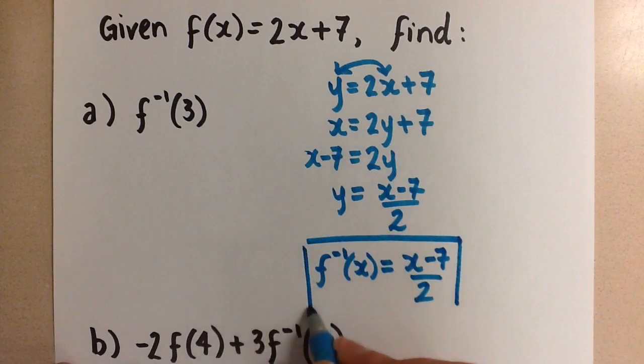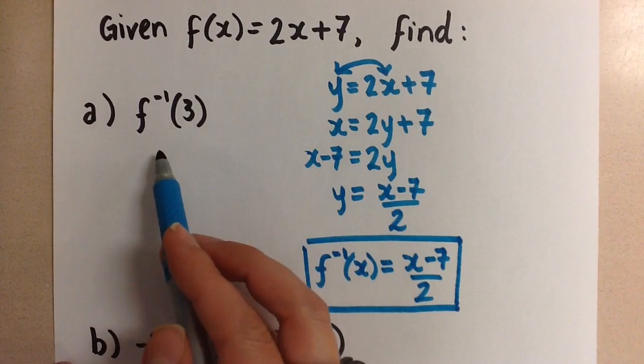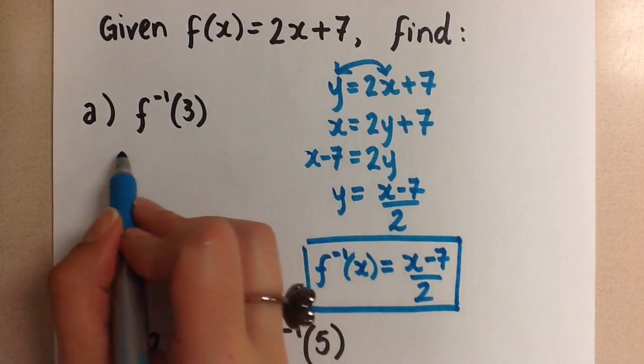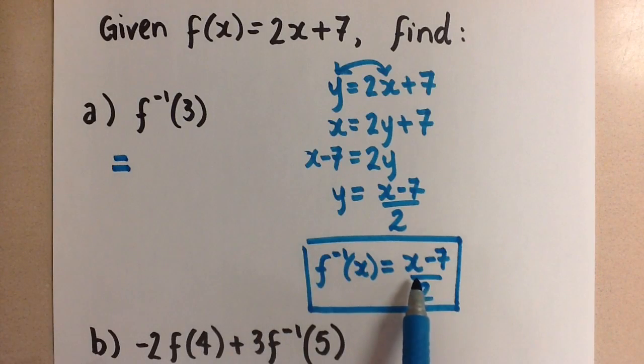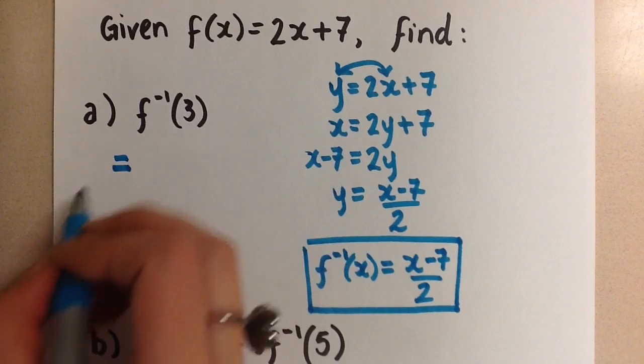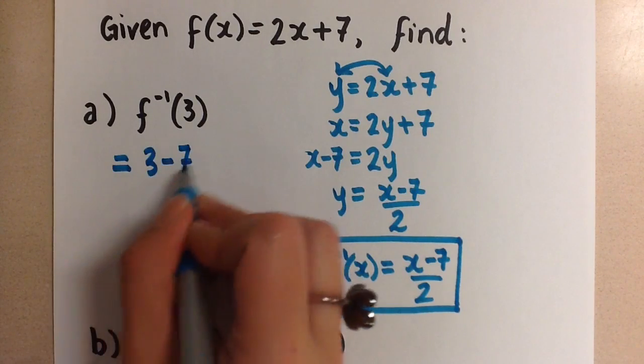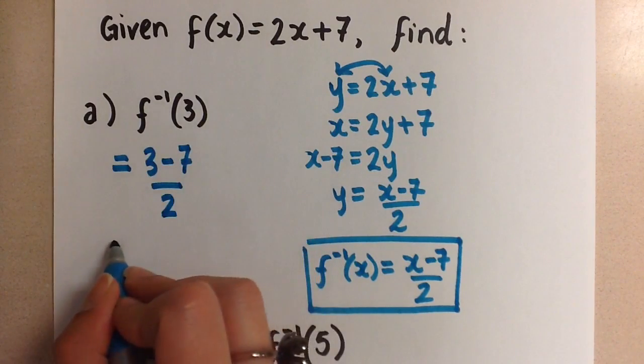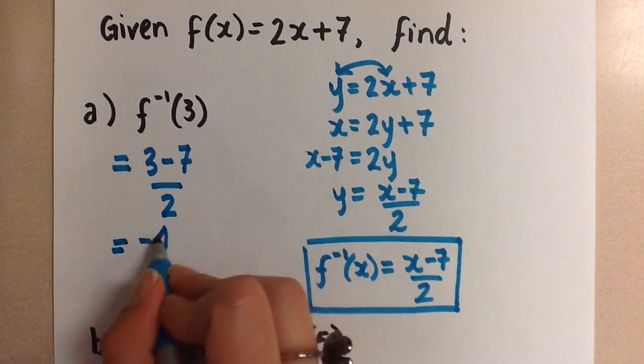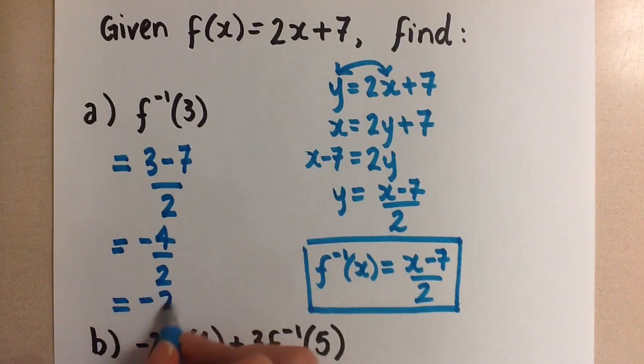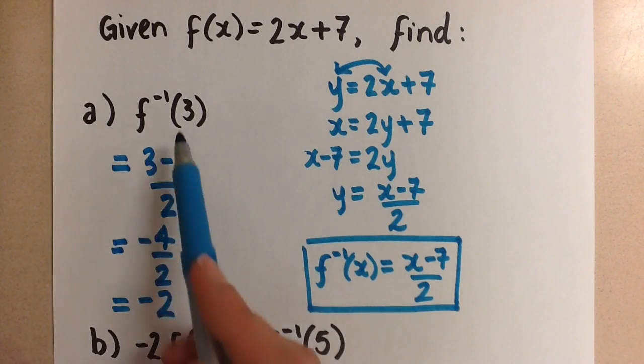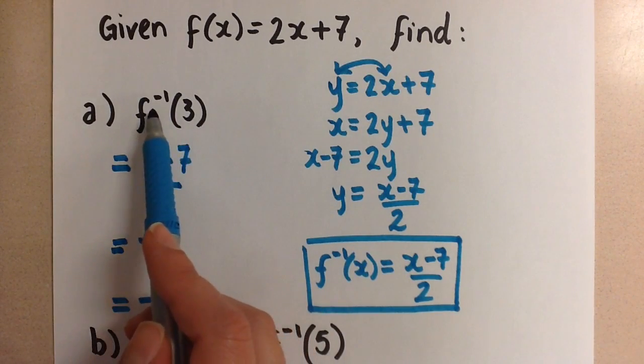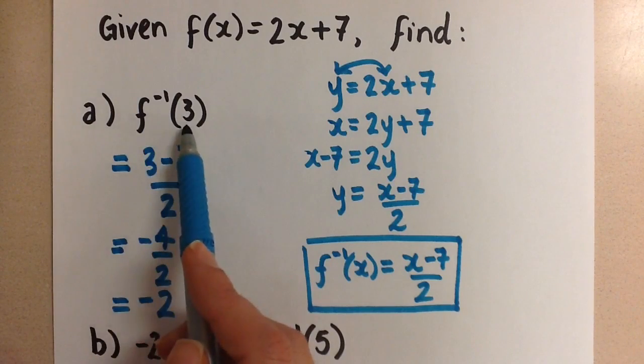So we're going to use this to evaluate this expression. So now we'll come over here. And we want to sub in 3 for the x in the inverse equation. So that's going to be 3 minus 7 over 2, which gives us negative 4 over 2, which is negative 2. And so this negative 2 is the value of the inverse of f at 3.